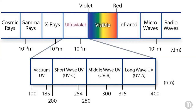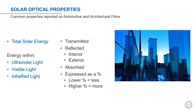Solar gain from UV light is minimal, accounting for only 3% of the heat. Visible light is responsible for 44% of the heat, while near infrared is responsible for 53% of the heat gain. Total solar energy consists of 3% UV rays from 300 to 380 nanometers, 44% visible light from 380 to 780 nanometers, and 53% infrared rays from 780 to 2500 nanometers — this is the main source of heat.